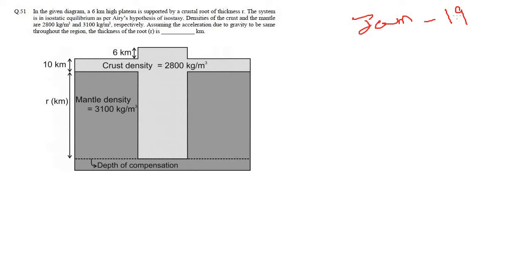There are 2 or 3 hypotheses and they have defined formulas accordingly. According to Airy's hypothesis, if there is a certain topography of a certain height — for example, 6 kilometers — then to support that topography, inside the earth there has to be a certain root to support that structure above.